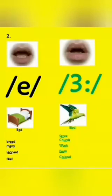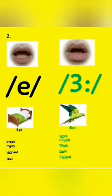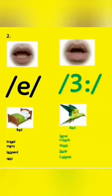Moving on, we have the 'e' and 'er' sounds. For 'e,' the mouth is wider than that of 'er.' The 'e' sound is towards the front, while 'er' is towards the middle — it's more like a middle sound. For 'e,' we have 'bed,' 'bread,' 'many,' 'leopard,' and 'says.'